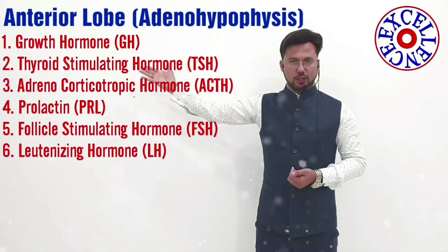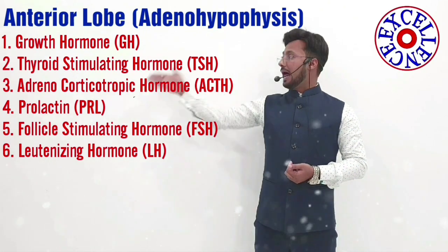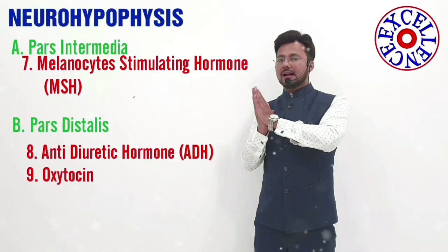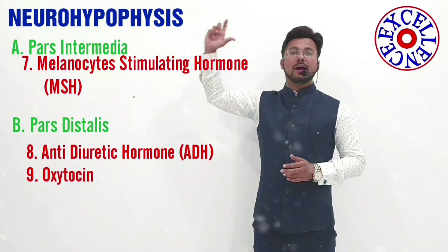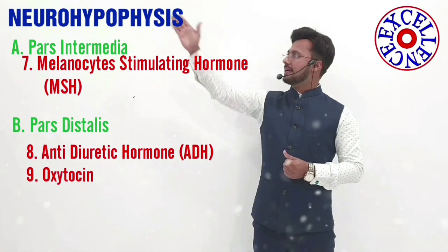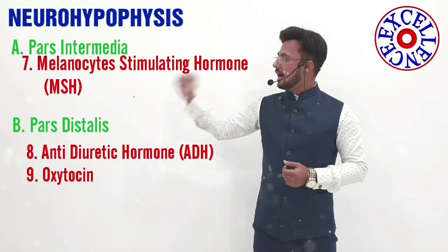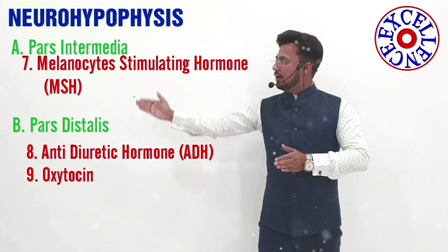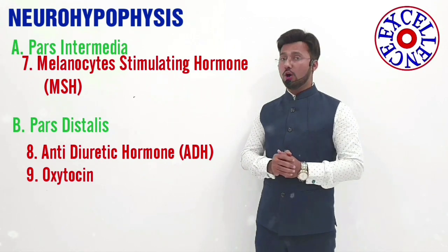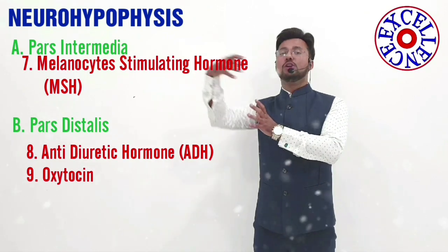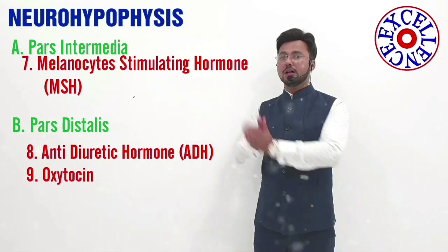The six hormones of the adenohypophysis are: growth hormone, thyroid stimulating hormone, adrenocorticotropic hormone, prolactin, follicle stimulating hormone, and luteinizing hormone. The neurohypophysis has two parts: pars intermedia and pars distalis. Pars intermedia releases MSH, the melanocyte stimulating hormone, and pars distalis releases ADH, the anti-diuretic hormone, and oxytocin. Overall, there are nine hormones released by the pituitary gland — six from the adenohypophysis and three from the neurohypophysis.